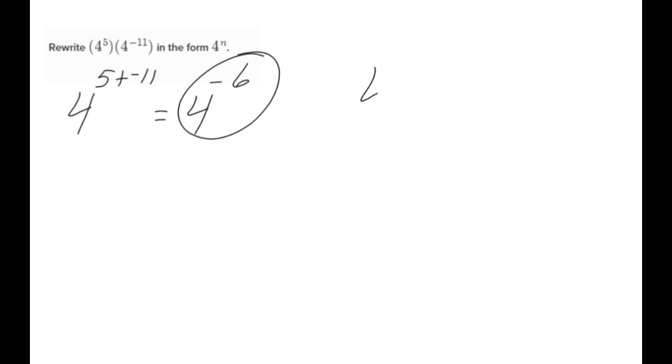Khan Academy, you'll put in the 4. You do the shift 6, so you get the caret. And then minus 6. And it should show up as 4 to the negative 6th as you type that in.